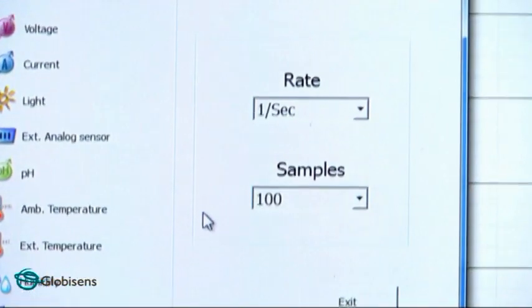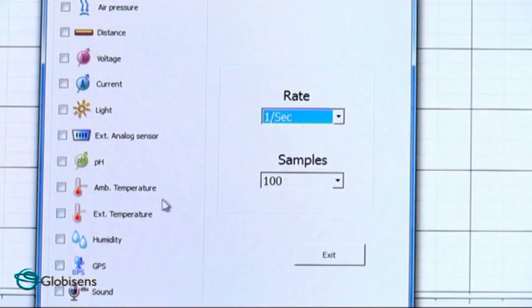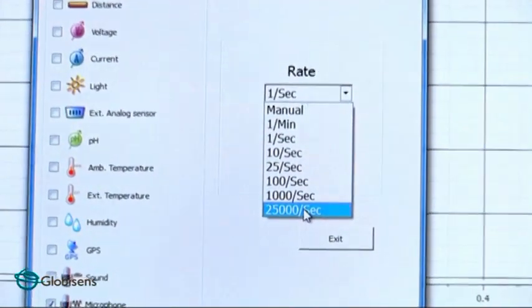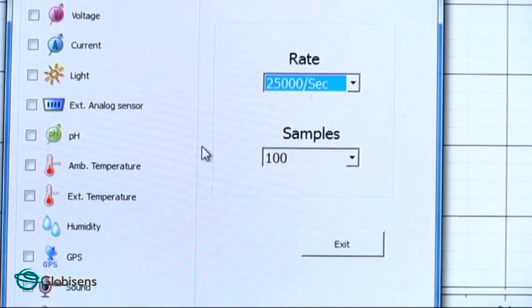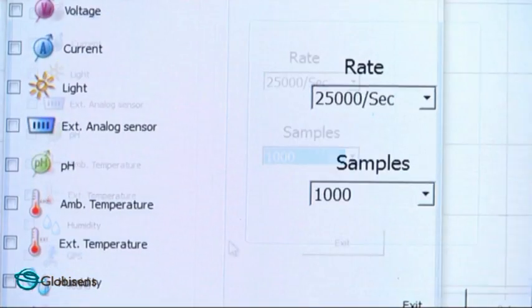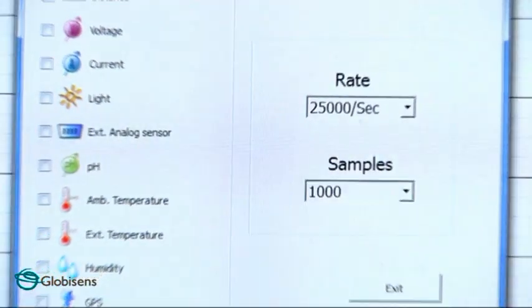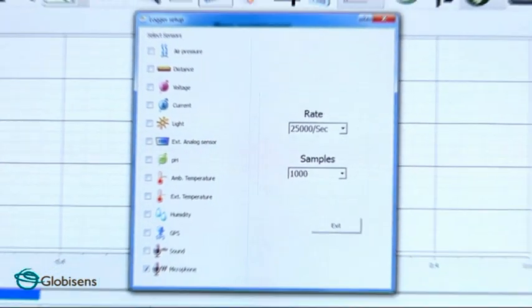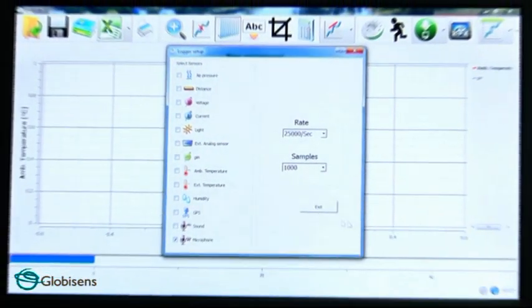A sound wave is really fast. And luckily for us, we can take very fast measurements of up to 25,000 samples per second. In this experiment, we will choose 1,000 samples. Since we take 25,000 samples per second and only 1,000 samples, this whole experiment will last less than a second.